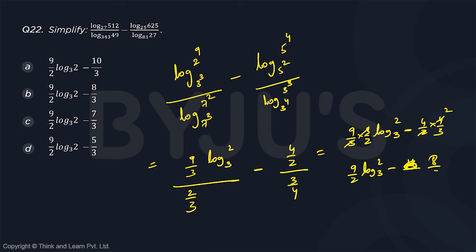So instead of 16, you will get 8 by 3. So 9 by 2 log 2 by 3 minus 8 by 3, which is option B.